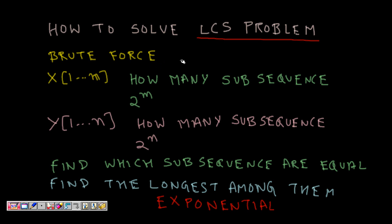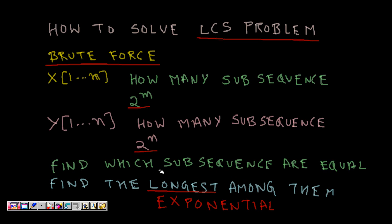For any combinatorial problem we can use brute force. From x1 to m we can make 2^m subsequences, and from y we can make 2^n subsequences. We match them and whichever common subsequences have the longest length is the answer. However, the complexity of this algorithm is exponential, which is not efficient.